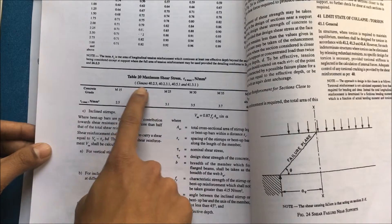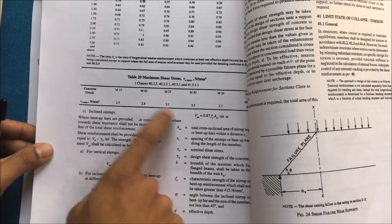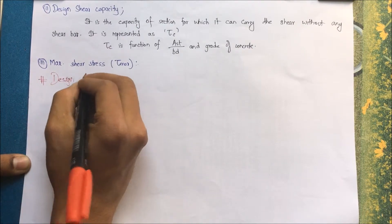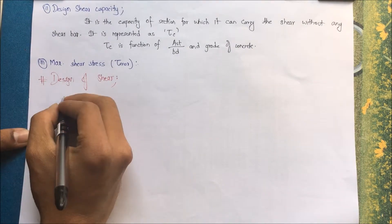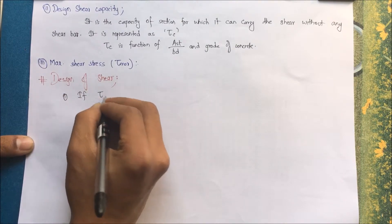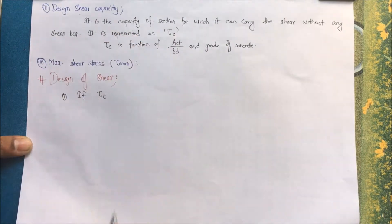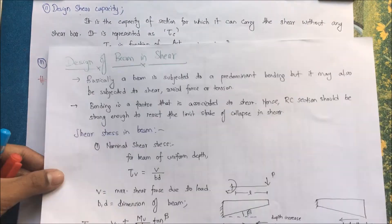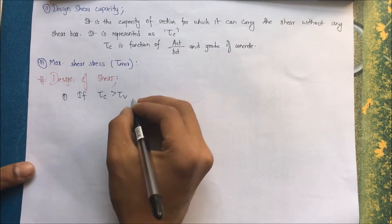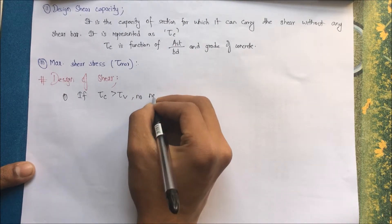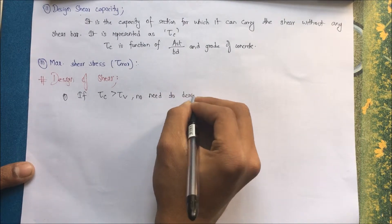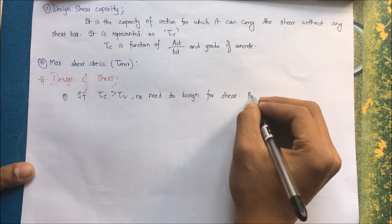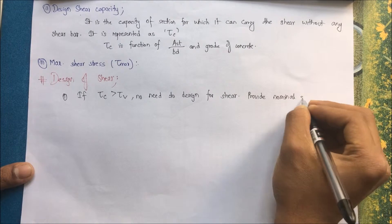For design of shear — whether shear reinforcement has to be provided or not — there are three cases. Case 1: if τc is greater than τv, meaning design shear capacity is greater than nominal shear stress, then no shear reinforcement design is needed because shear will be resisted by the concrete alone. Provide nominal shear reinforcement only.